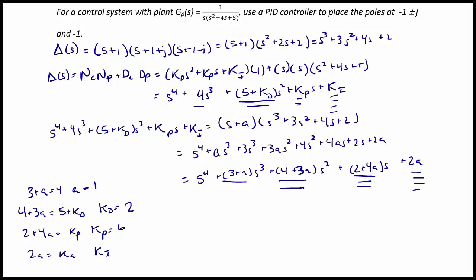So ki is equal to 2. So the controller, gc, is equal to 2s squared plus 6s plus 2 over s.